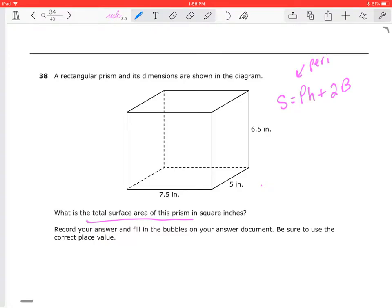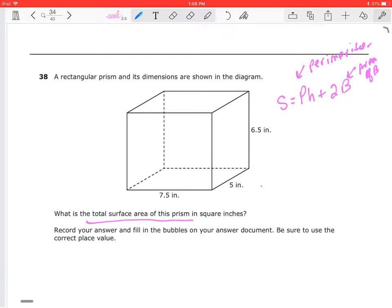Now, a couple comments I need to make. The P here is our perimeter of the base, and the big B is the area of the base.